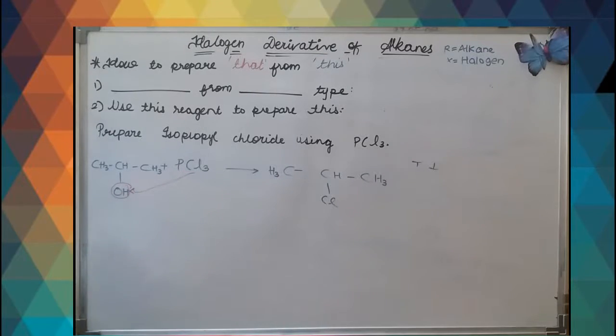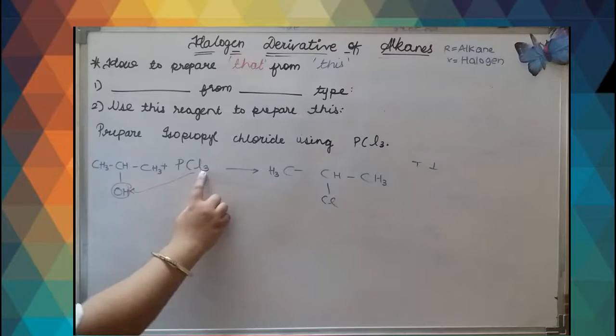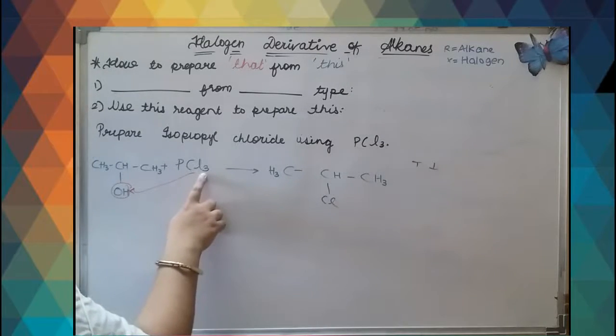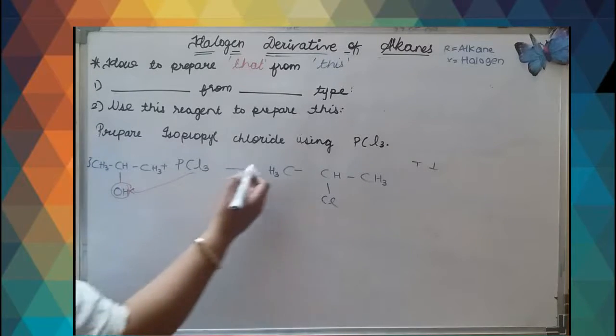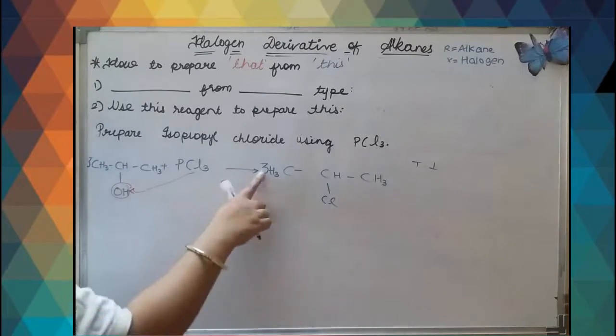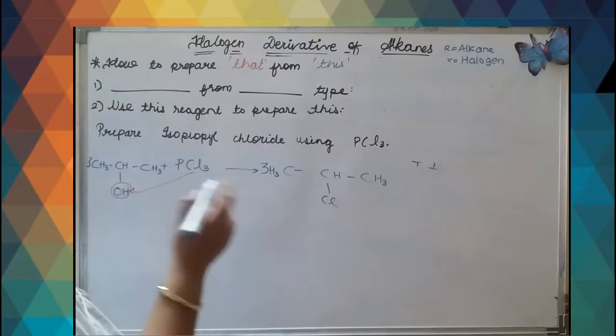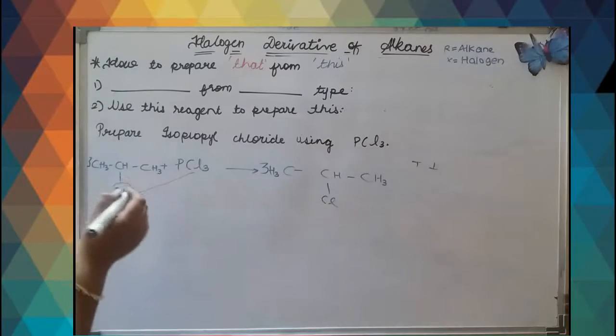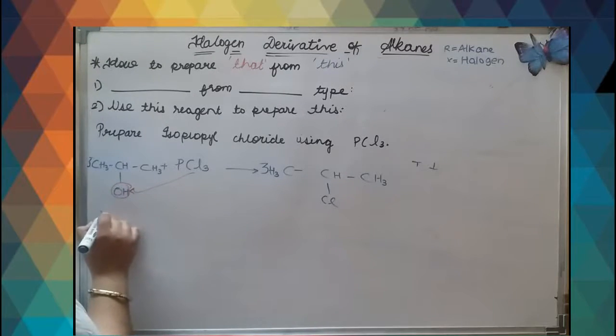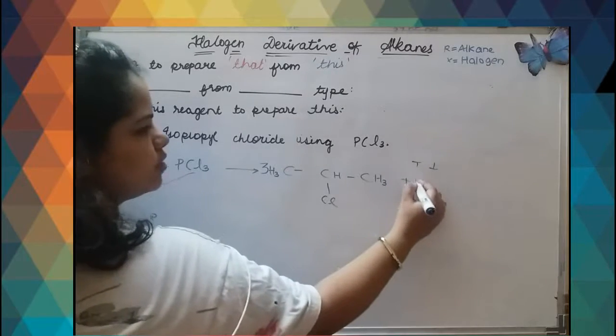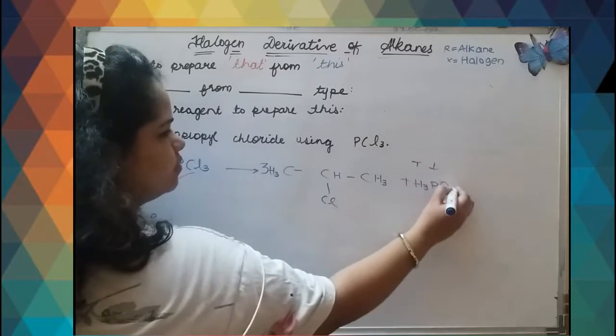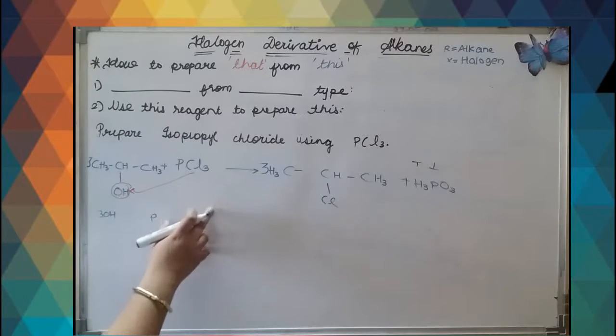This chlorine group gets attached here and OH group gets attached here. But since there are three moles of chlorine, we have to balance it. You have to add three here. Since there are three chlorines in product, what we will get remaining is 3OH and P, so H3PO3.